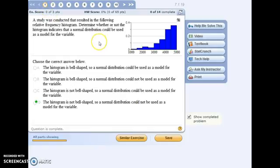For number one, if data has a normal distribution, then the histogram will be bell-shaped. Now this histogram is not bell-shaped, it is skewed to the left, so you could not use a normal distribution.